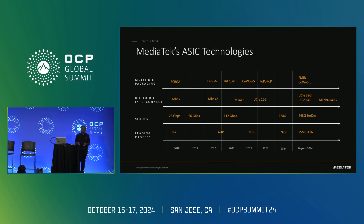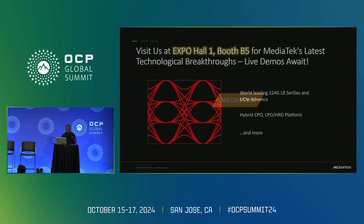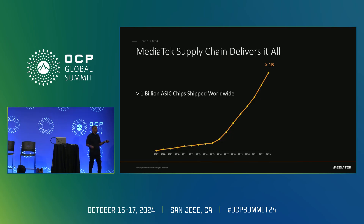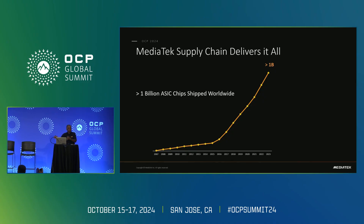Ultimately, you've got to be able to build these products. The ASIC business unit has been around for a while, and we've shipped over 1 billion ASIC units as of the end of last year. That means you have to have a whole supply chain, and we have that supply chain — we've been doing it for many years. Of course, we leverage a lot from the consumer business, but we take all that learning and adapt it to data center and cloud as well.